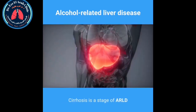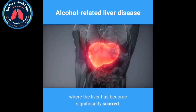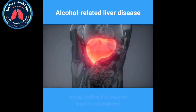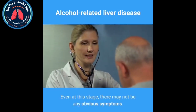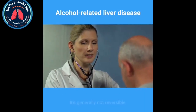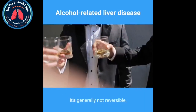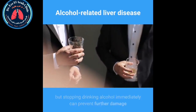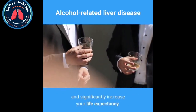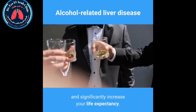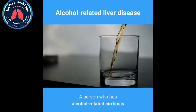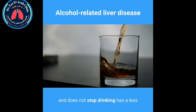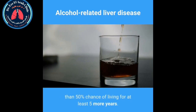Cirrhosis is a stage of ARLD where the liver has become significantly scarred. Even at this stage there may not be any obvious symptoms. It is generally not reversible, but stopping drinking alcohol immediately can prevent further damage and significantly increase your life expectancy. A person who has alcohol-related cirrhosis and does not stop drinking has less than a 50% chance of living for at least five more years.